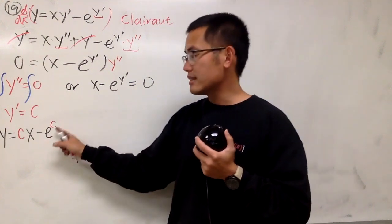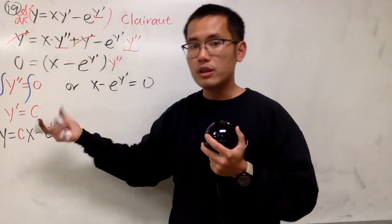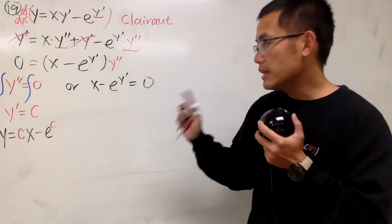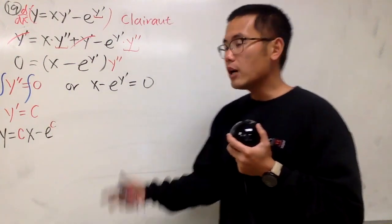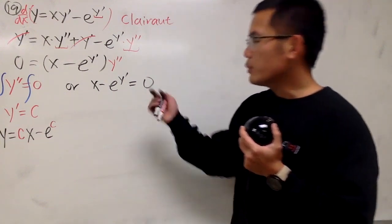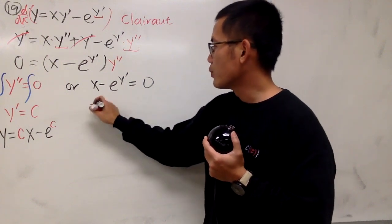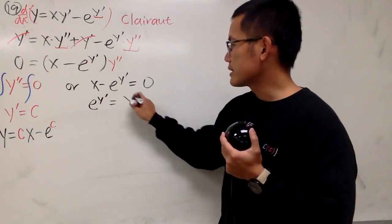And do not write this as another constant. Don't do that. Because originally it's just the first order. So just keep this as how it is, right? So that's the first part. Now, for the second part. Of course, to integrate this, we should isolate the y prime. To do so, I will just move this to the other side. In another word, e to the y prime is equal to x.